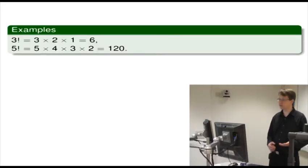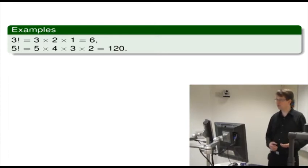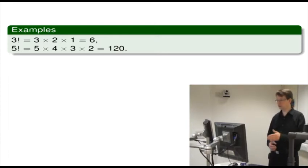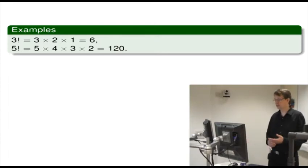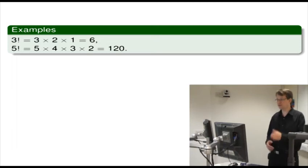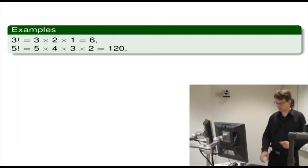For example, 3 factorial is 3 times 2 times 1, which is 6. 5 factorial is 5 times 4 times 3 times 2. I've not put in the 1 there because something times 1 doesn't make any difference, so that's just 5 times 4 times 3 times 2, which is equal to 120.